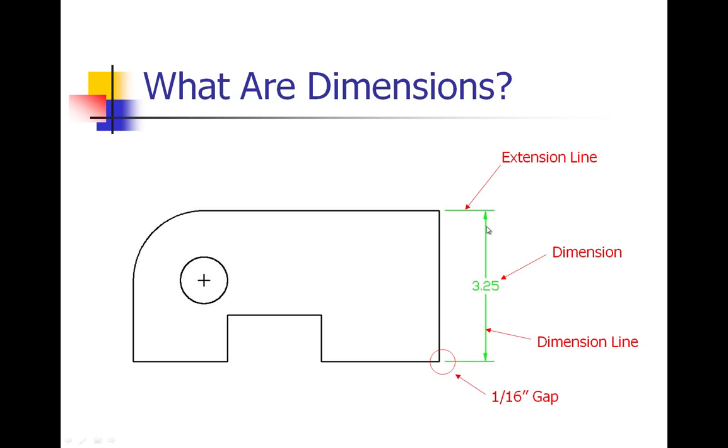Then we have some lines with arrowheads on the end of them. Those are actually called dimension lines.